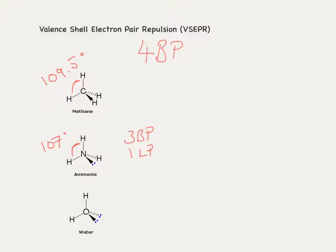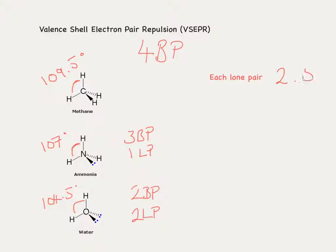Our next example is water. Water has four pairs of electrons, but instead of three bond pairs we now have two bond pairs and two lone pairs of electrons. Again, the lone pairs repel more than the bonding pairs and take up more room, reducing the bonding pair angle by another 2.5 degrees. We have a new bond angle of 104.5 degrees. So for each lone pair, we reduce the bonding angles between the bond pairs by 2.5 degrees.